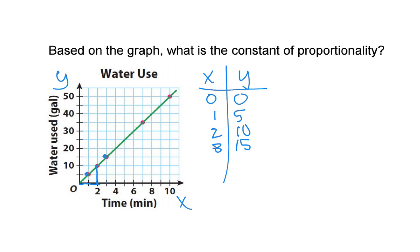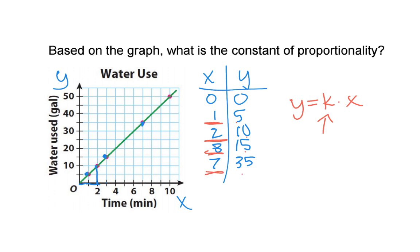We can continue this on — they do give us some additional points. So if seven minutes have passed, then thirty-five gallons have been used. Remember, when we're looking for the constant of proportionality, I want to find a number I can multiply by x to get to y — that k value. What could I multiply one by to get to five? Two by to get to ten? Three by to get to fifteen? Seven by to get to thirty-five? You can figure out that k value has to be five.